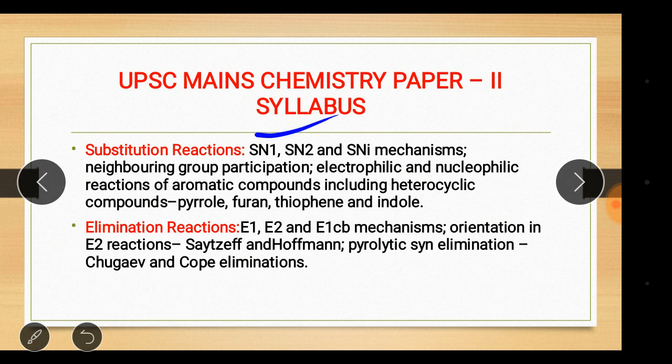Substitution reactions: SN1, SN2 and SNi mechanisms, neighboring group participation, electrophilic and nucleophilic reactions of aromatic compounds including heterocyclic compounds — pyrrole, furan, thiophene, indole. Elimination reactions: E1, E2, E1cb mechanisms, orientation in E2 reactions.